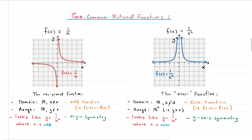Here are two common rational functions. The first is the reciprocal function 1 over X. It kind of looks like a mirror image — two bows, if you're thinking of bow and arrows, pointing towards the origin as if they're going to shoot an arrow through it. One bow is in the first quadrant and the other is in the third quadrant. They get closer and closer to the X and Y axes but don't actually touch, because there are horizontal and vertical asymptotes there that keep them from touching.